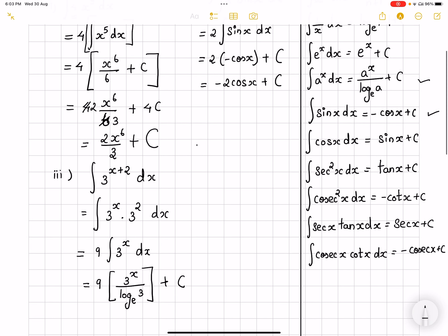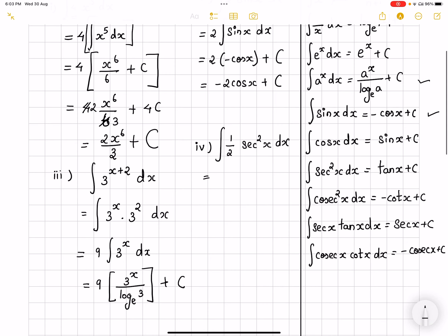We have half of secant square x dx. So just observe here. Half is going to be the k constant. I am taking it out. I am left with integral secant square x dx. What is the integration of secant square? It is tan x. So half of tan x plus c. So that's going to be my answer for this one.